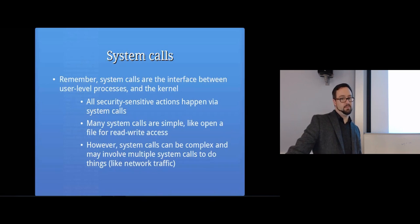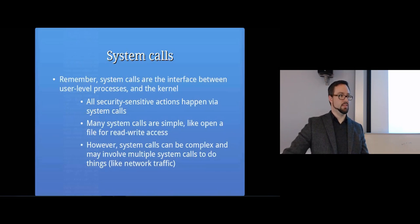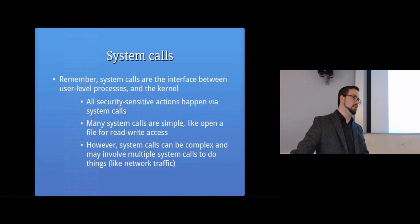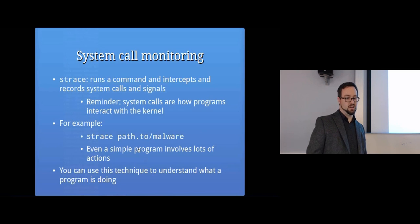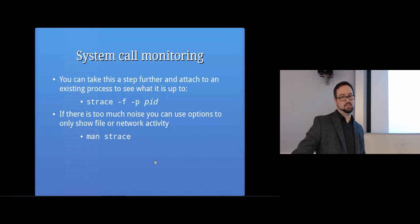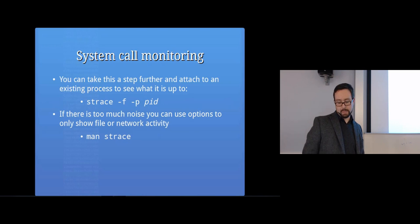Everything that's security-sensitive should happen via a system call. Many system calls are quite simple - like opening a file - but they can be complex, and sometimes there are multiple calls to do one thing. For example, making a network connection involves a whole series of system calls to set it up. It's not super simple to look at, but it's simpler than debugging. If you want to do that, use the 'strace' command on a Unix system, which shows you all the system calls. You can start up the program using strace, or attach to an existing running process.